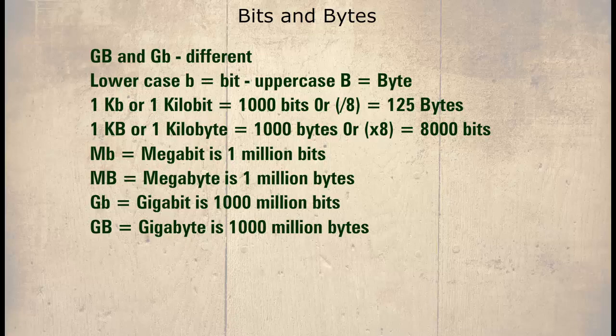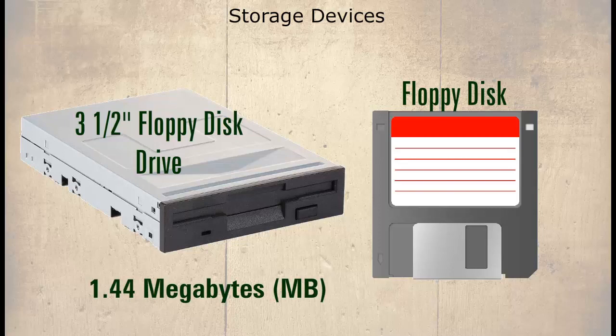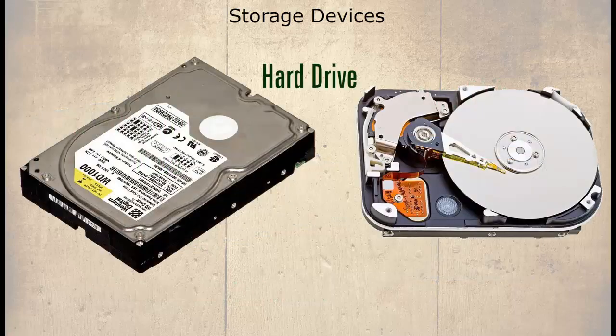Although this may seem trivial, it can be important as a single byte equals 8 bits, and you should try to be as accurate as possible. The floppy disk drive allows data to be stored on removable floppy disks. The most common type is the 3.5 inch 1.44 megabyte floppy disk. This offers a tiny amount of storage when compared to hard drives or optical solutions, and because of this the floppy disk has now all but disappeared in modern PCs.